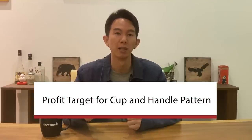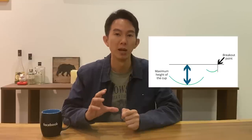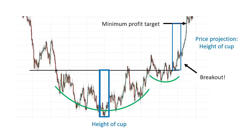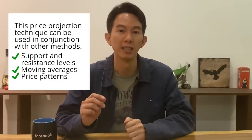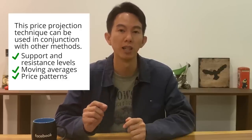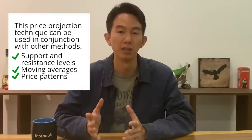How do you get a profit target for the cup and handle pattern? Once the pattern is identified, you can use the completed pattern to do a price projection as a good estimate for target profit. To measure the target price, take the maximum height of the cup and project that distance from the breakout point. In the chart, the maximum height of the cup is indicated by the blue rectangular box, which is then projected at the breakout point. The black horizontal arrow indicates the price level serving as the minimum profit target. You can also look for confluence with other tools such as support and resistance levels for an additional layer of confirmation.